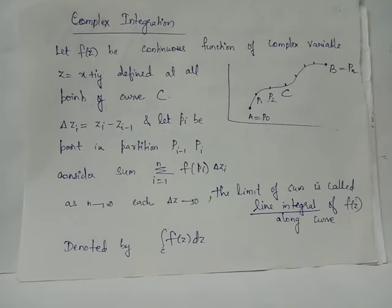Hence we have delta z tending to 0, and if the limit of the sum exists, then we call it as the line integral of f(z) along the curve c.